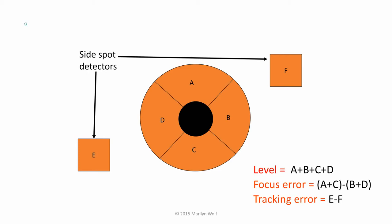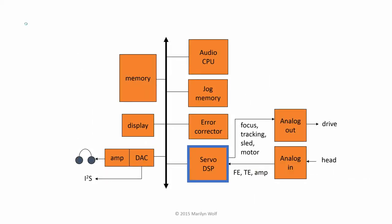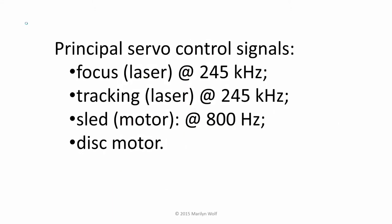In addition, we have two other spots known as E and F that help us with tracking. The tracking error is computed as E minus F. In order to make sense of these optical readings, the CD processor includes a servo digital signal processor that is dedicated to the control of the mechanism. That DSP has to run at several different rates: laser focus runs at 245 kilohertz, tracking control also runs at 245 kilohertz, sled control runs at a much lower rate of 800 hertz, and the disc motor runs at a very low rate.